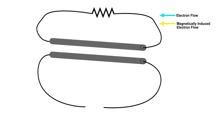Here's the setup. You can see I've got two wires here. And when I add a battery, we get electrons flowing from the negative side of the battery through the wire to the positive side.